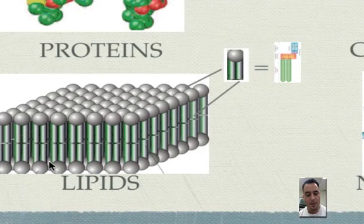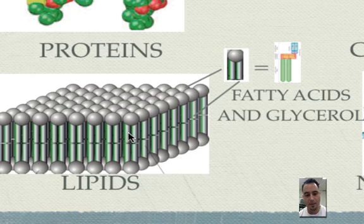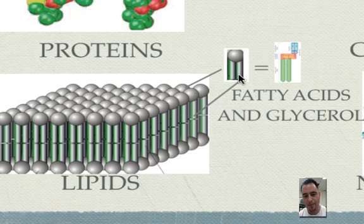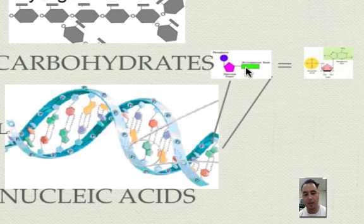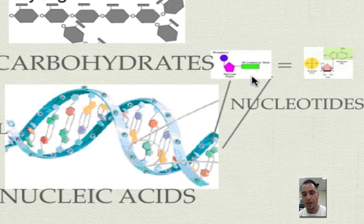Moving to lipids — this is a phospholipid bilayer. It's a polymer made up of many building blocks called fatty acids and glycerol. Here are the chains of fatty acids and here's the glycerol piece. This part loves water; this part hates water. That's one thing about lipids — they don't mix very well with water. Finally, we have nucleic acids like DNA and RNA, and the building blocks are nucleotides, shown here in chemical symbol form.